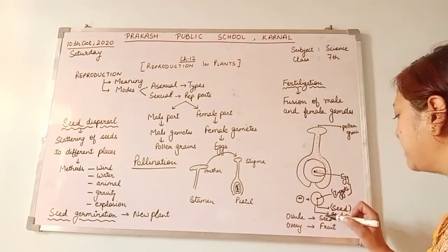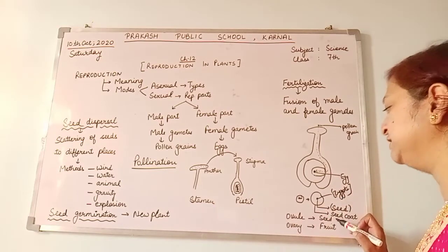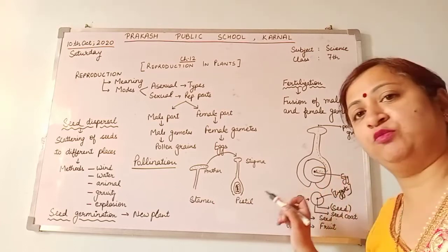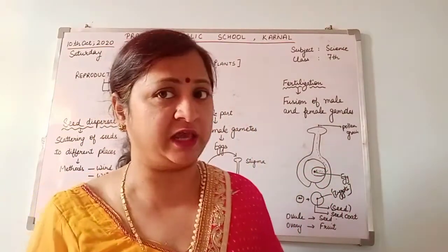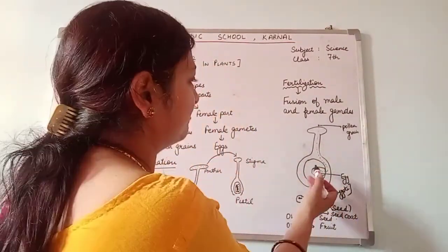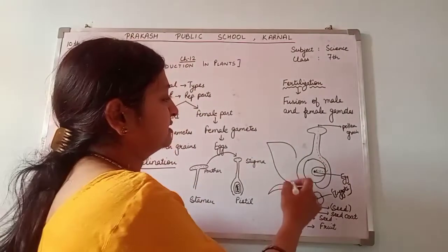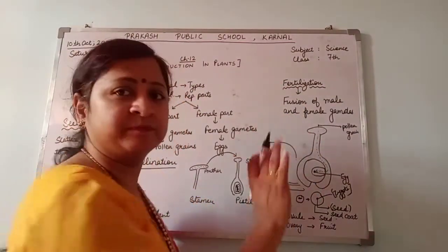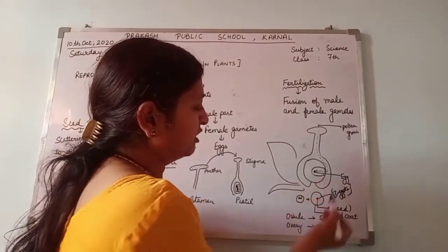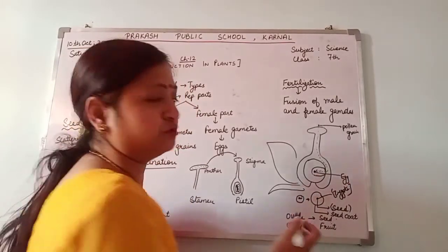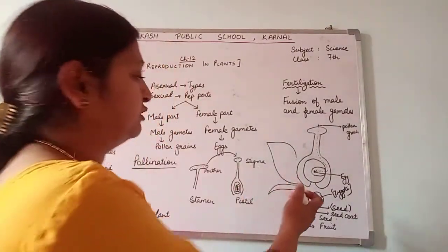The ovary is converted into fruit, and the ovule is converted into seed. The other parts of the flower are shed off. Only the ovule converts into seed and the ovary converts into fruit.